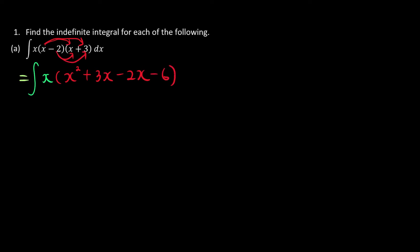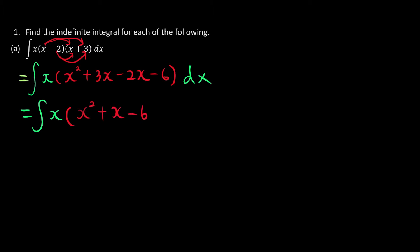And everything with respect to x. Now we continue with the integration of x, and we're going to simplify whatever is inside. 3x minus 2x is just x. This is why we have x squared plus x minus 6, and everything is integrating with respect to x.